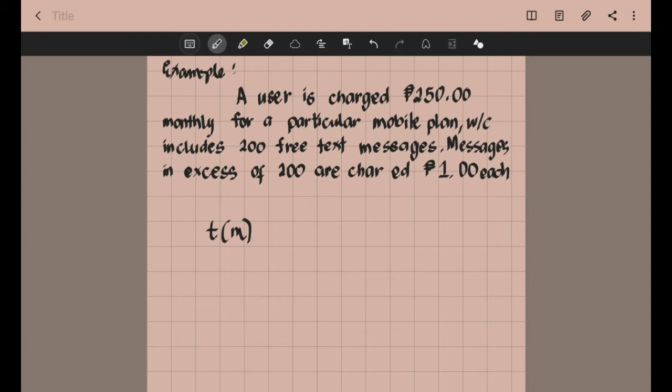Let's write our first formula. We have T of M equals 250. Why? Because the first formula is when text messages don't exceed 200. So T of M equals 250 if the number of text messages is greater than 0 but less than or equal to 200.